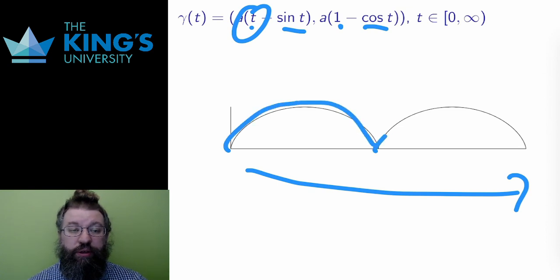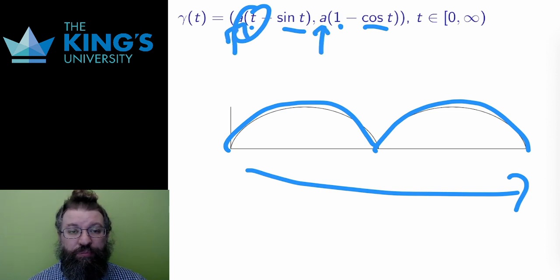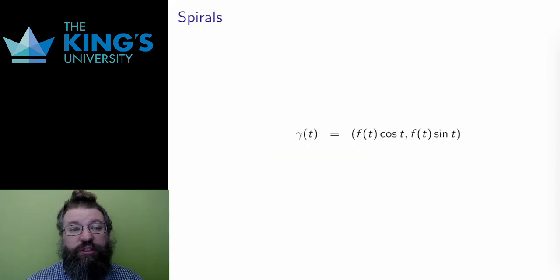This is called the cycloid, and the parameter a here is the radius of the circle that it is based on.